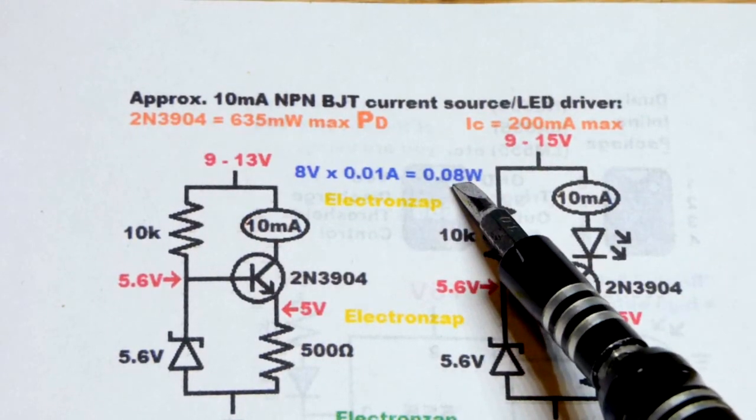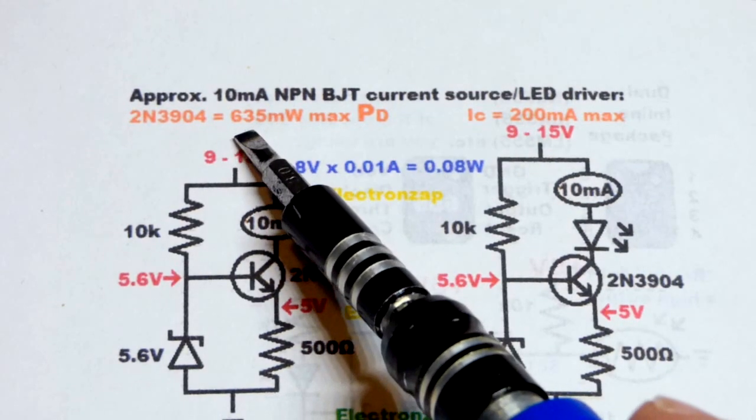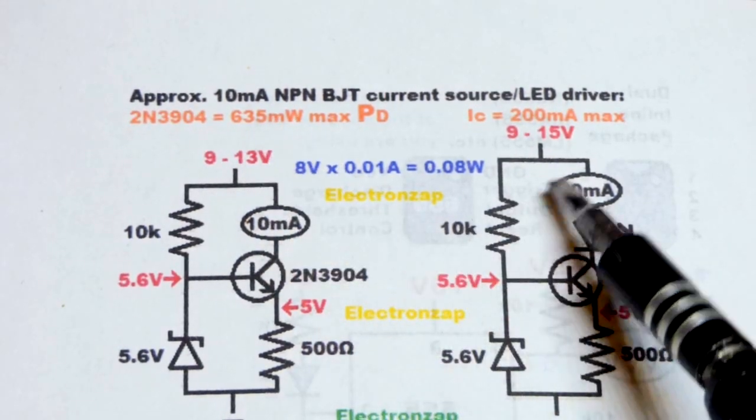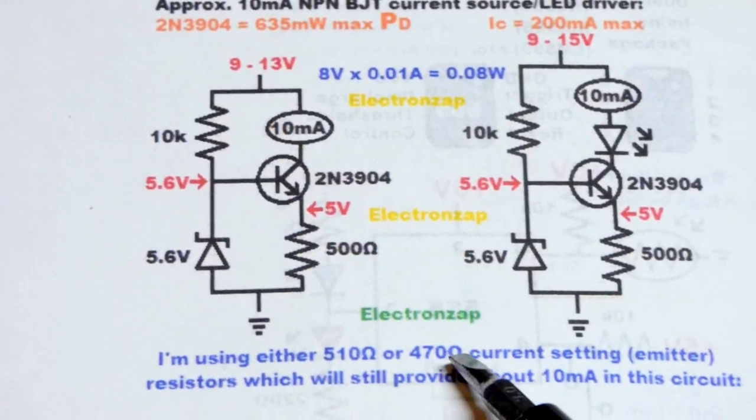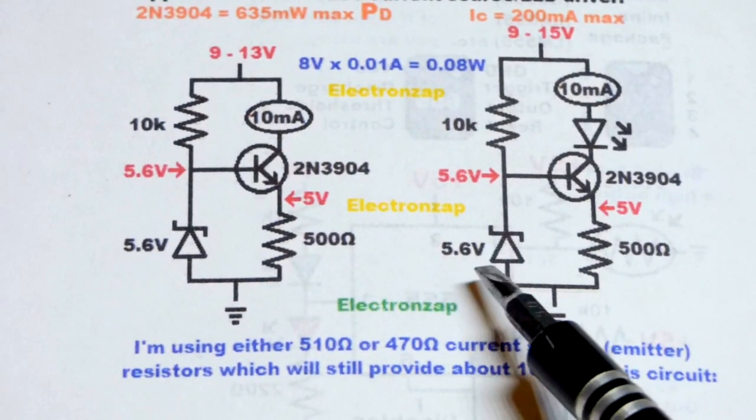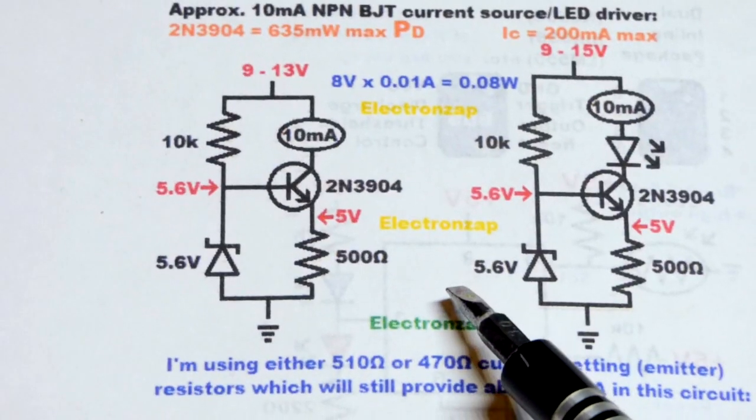That's 80 milliwatts. You can see 635 milliwatts there. But still it quickly increases the power dissipation as you raise that voltage, so I wanted to keep it within safe levels.